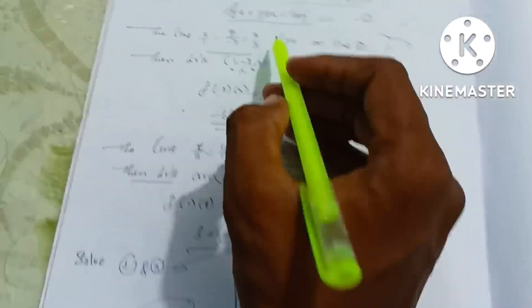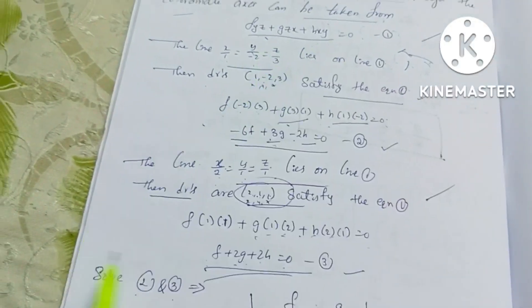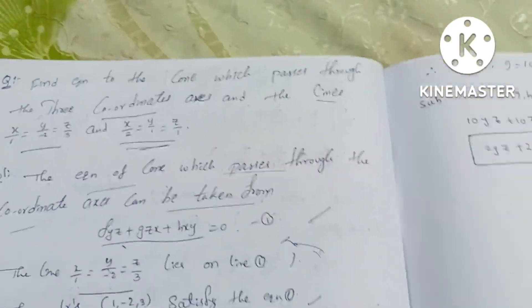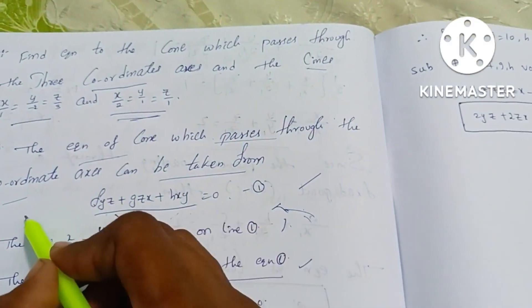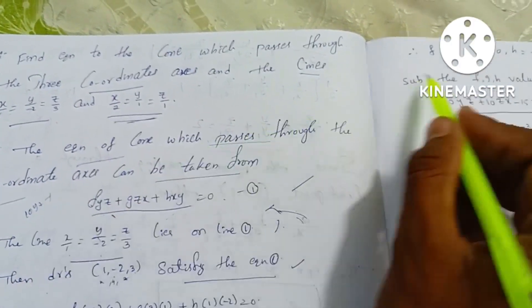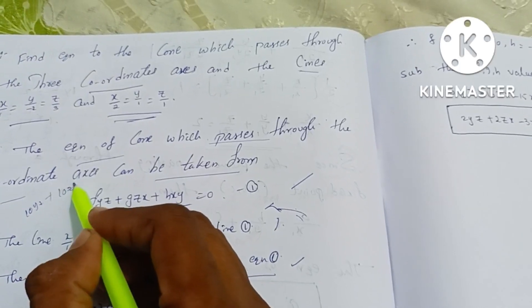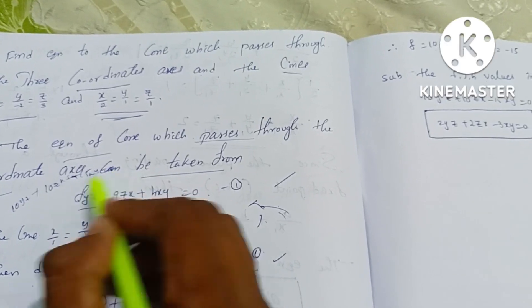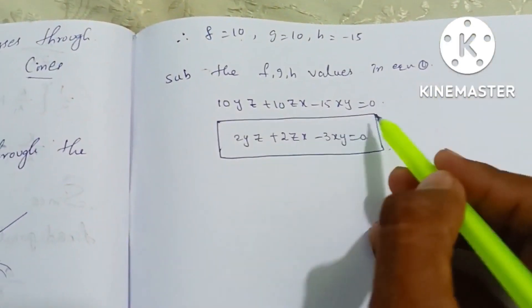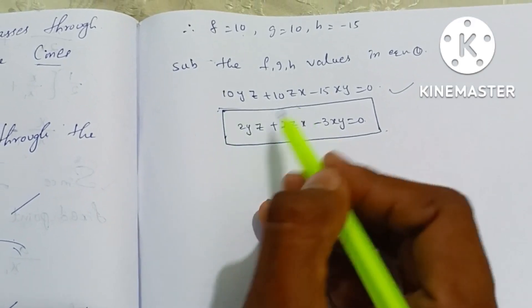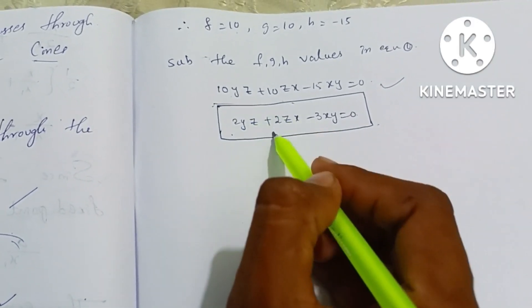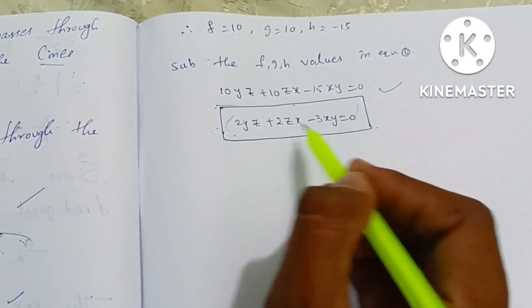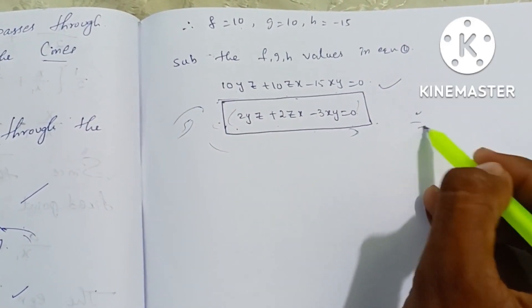So f = 10, g = 10, h = −15. Substituting these values into Equation 1: 10yz + 10zx − 15xy = 0. Dividing through by 5 gives the final equation: 2yz + 2zx − 3xy = 0. This is our solution.